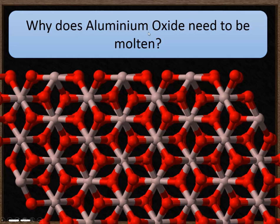It's also really important that the aluminium oxide is molten. So the question at the top says, why does aluminium oxide need to be molten? This is a diagram of what aluminium oxide looks like in the solid state. We call this a lattice, or an ionic lattice. This means that the particles of oxygen, the red ones, and the particles of aluminium, the sort of grey ones, are held together really strongly by ionic bonds.